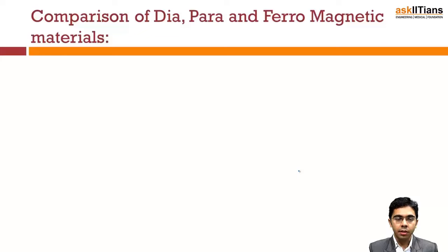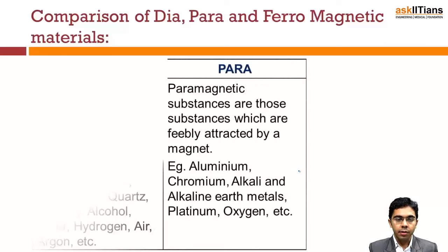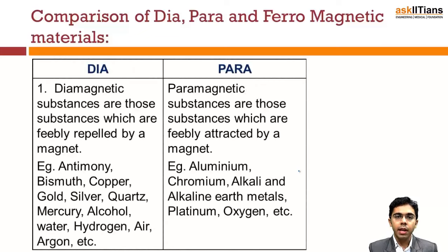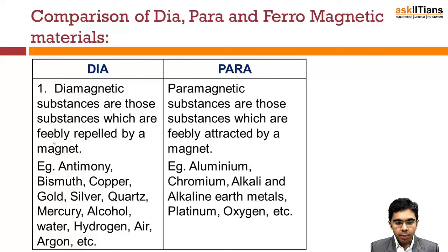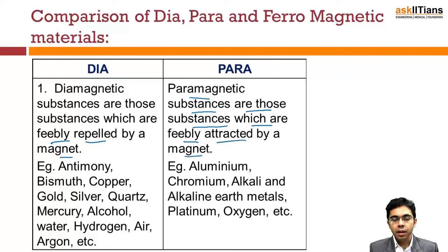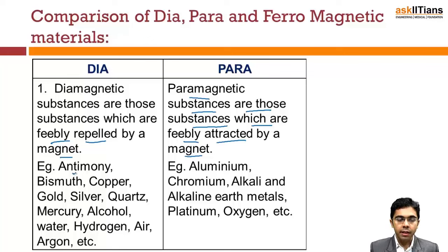Diamagnetic substances are those which are feebly repelled by a magnet. Paramagnetic substances are those which are feebly attracted by the magnet. Examples of diamagnetic materials include antimony, bismuth, copper, and gold.